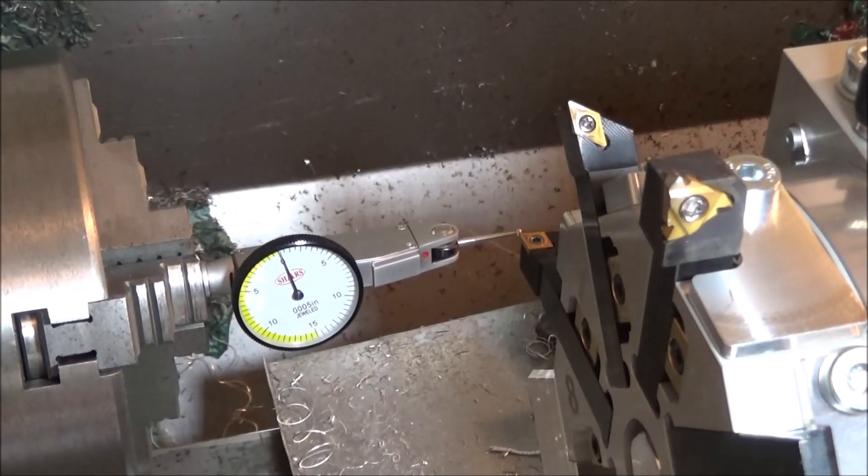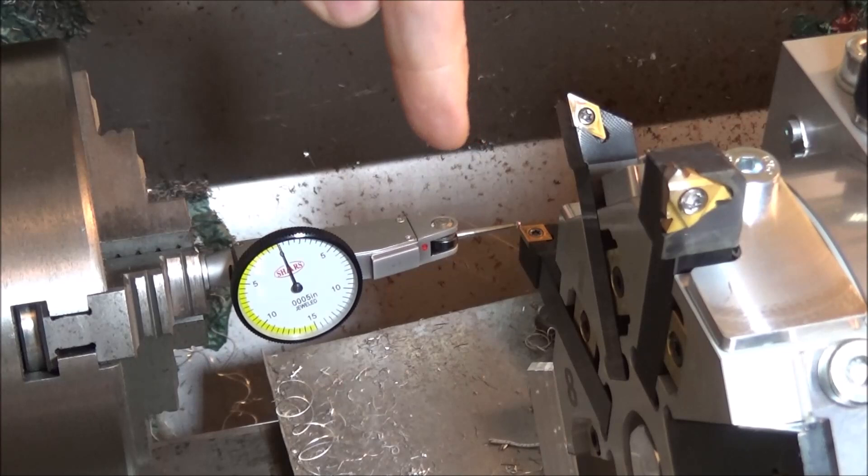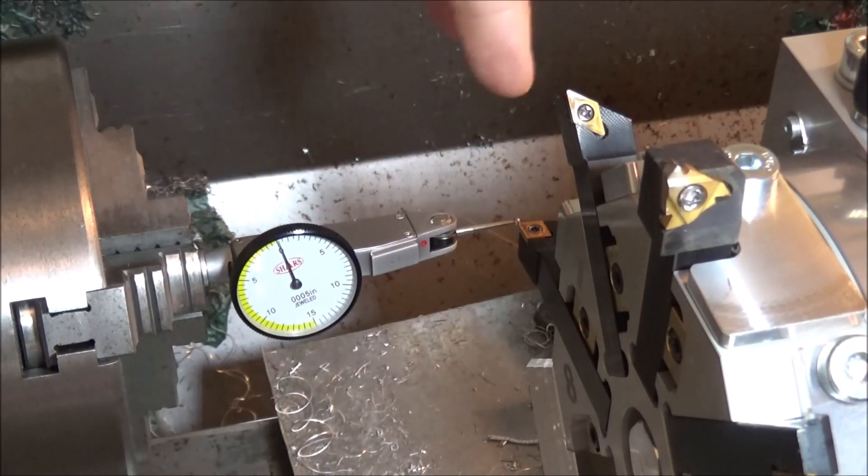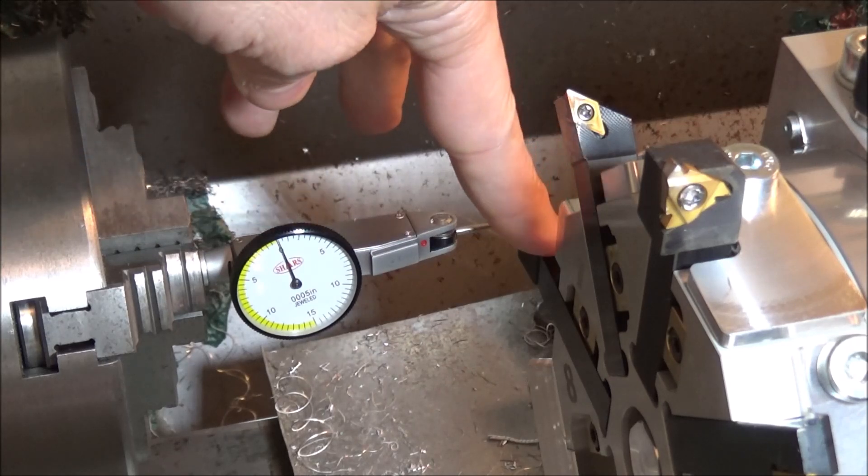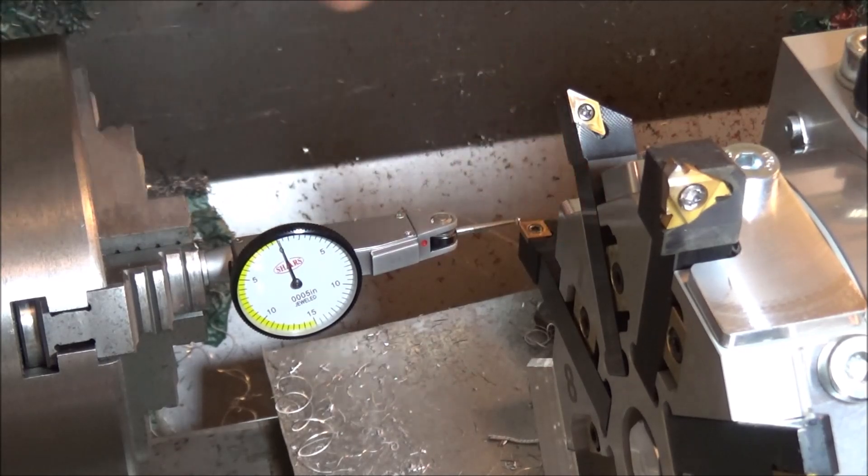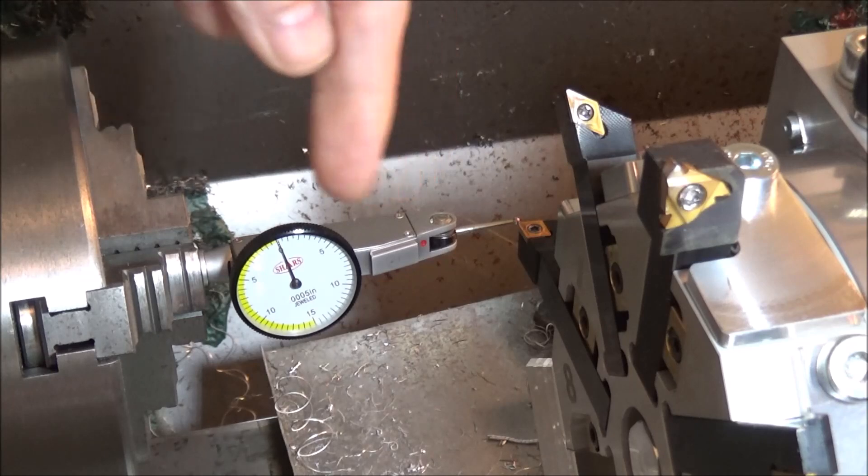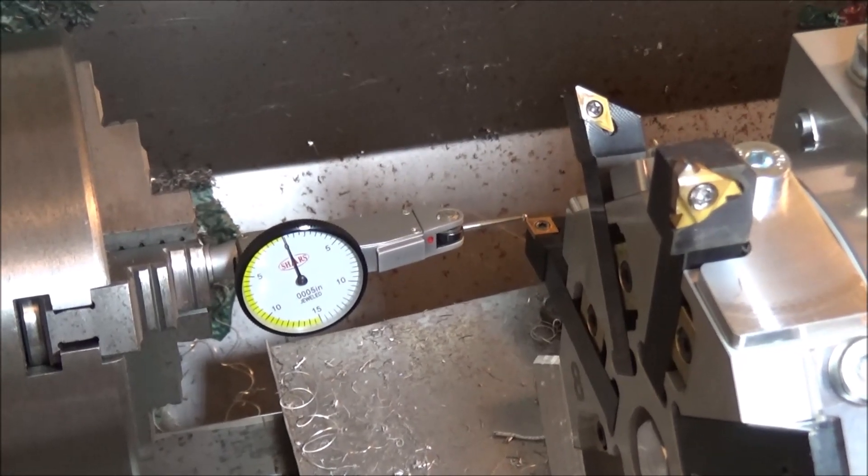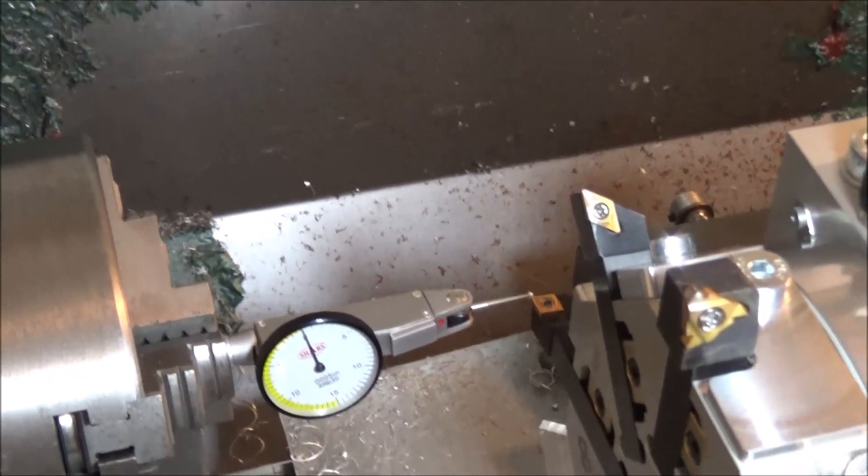Alright guys, so what I'm going to do here is just set up the tool offsets for the turret. What I've done is I've rotated this to tool number 1, which is my master tool. I have jogged this in until my indicator reached zero, and then I have zeroed out my X-axis DRO here.